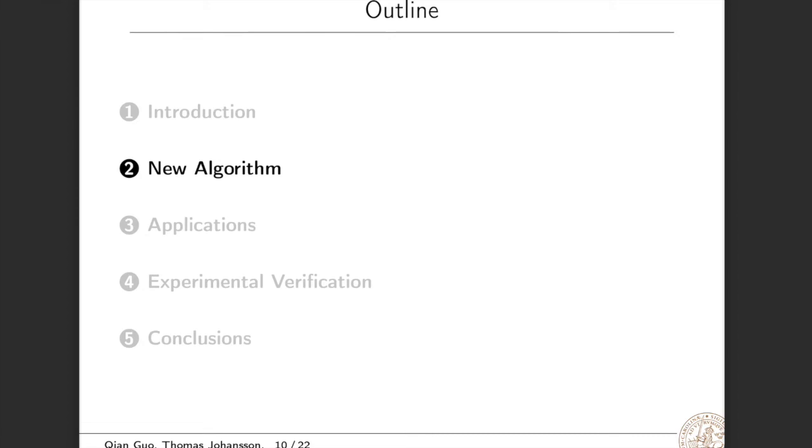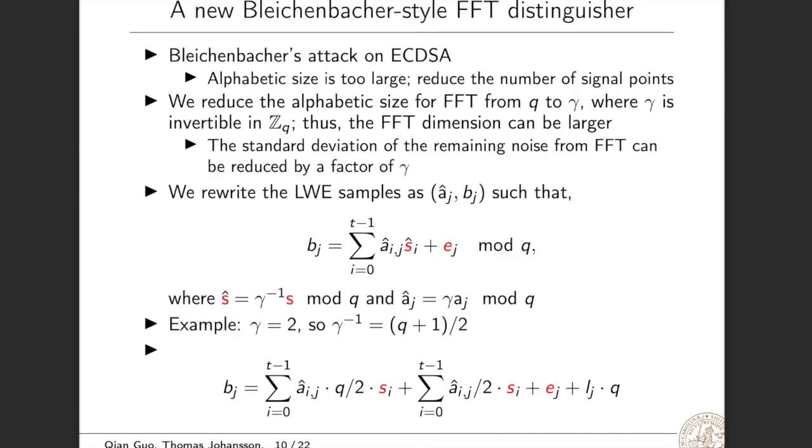Now I will present the new algorithm. We present the new FFT distinguisher. This distinguisher is similar to the famous Bleichenbacher-Nguyen attack on ECDSA. Similarly, when the alphabet size is too large, we use a reduced size of signal points. Similarly, we reduce the alphabet size for FFT from q to gamma, where gamma is an invertible element in Z_q. Thus, the FFT dimension can be larger. Also, the standard deviation of the remaining noise from FFT can be reduced by a factor of gamma.